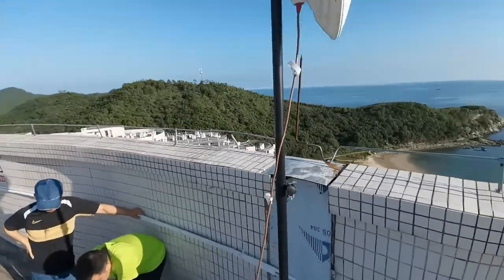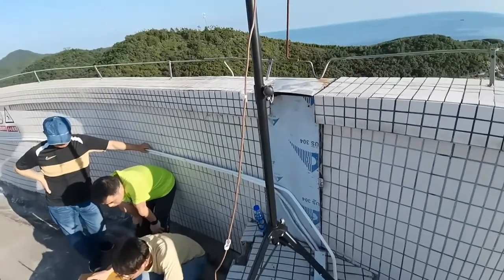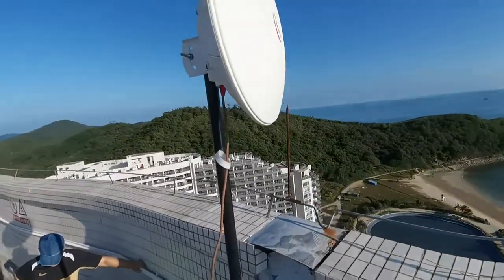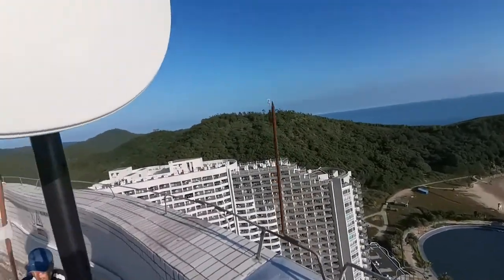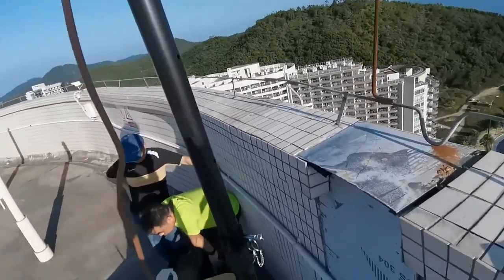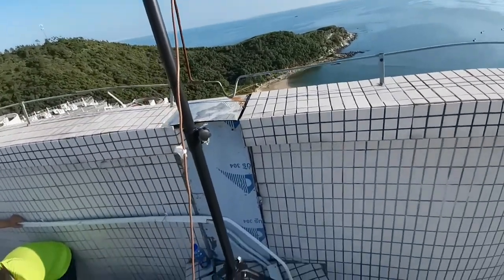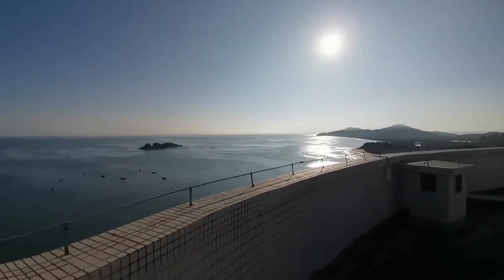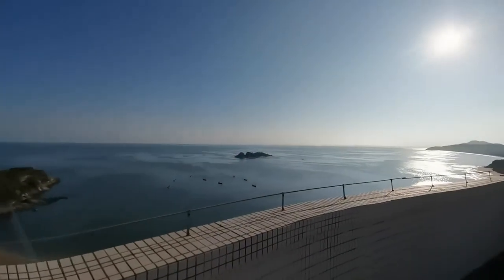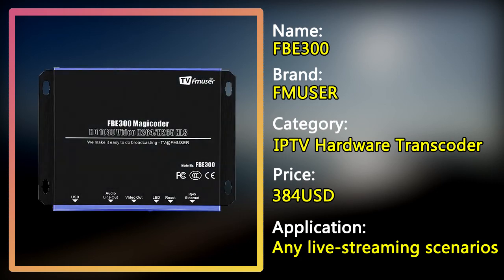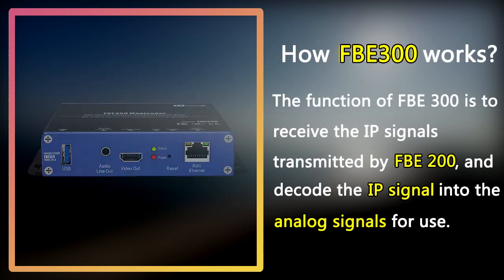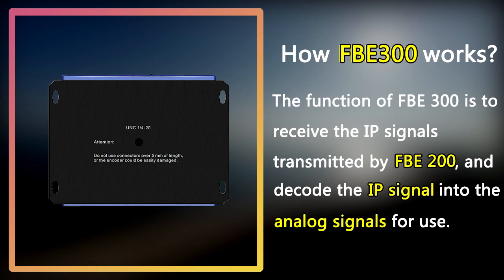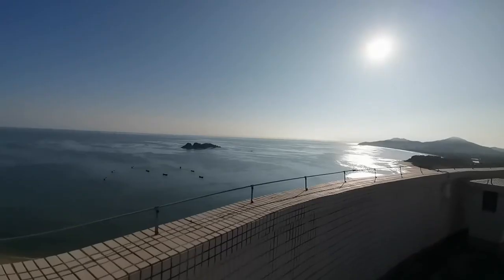This is the wireless bridge equipment. It can convert the wired network into a wireless network and transmit all the IP network signals to the receiving end. The IP network signal at the transmitting end is transmitted by the bridge equipment to the receiving end, about 10 kilometers from here. It is then changed into an analog signal through the FB300 transcoder. FB300 is one of the best hardware transcoders in the live streaming field. Its function is to receive the IP signals transmitted by FB200 and decode them into analog signals for use. Then we can play the program.